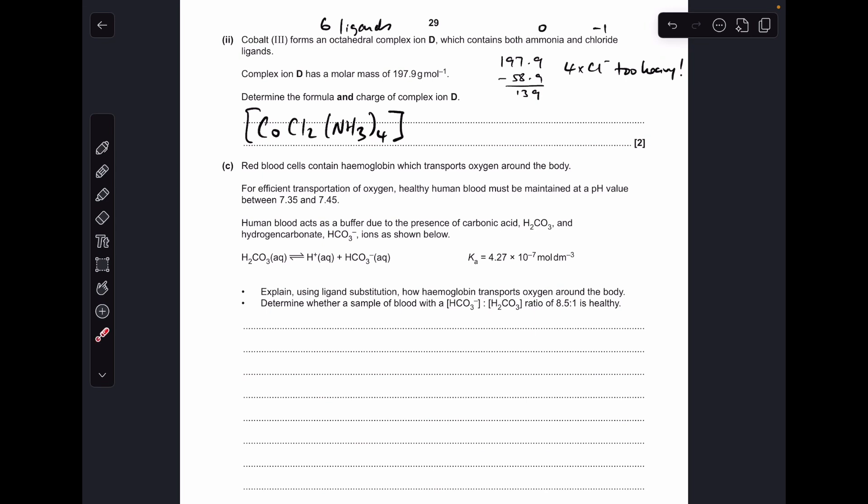And then if we just work out the overall charge: remember cobalt 3+, we've got two chloride ligands, 1- each, so that's taking it down to 1+. These are all neutral, so it's 1+.